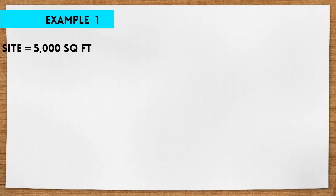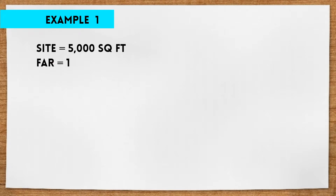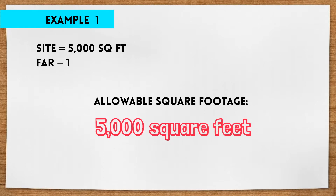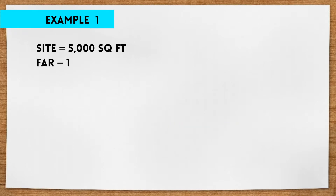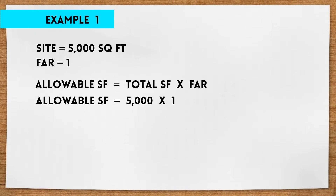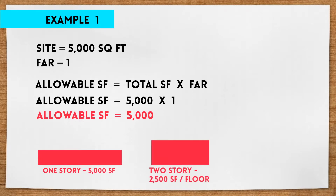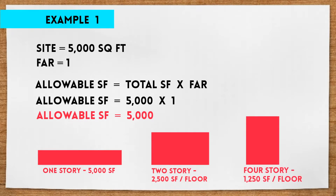Let's say the site is 5,000 square feet and you find out that the FAR is 1. That means that the owner is allowed to build a structure that's up to 5,000 square feet, because 5,000 times 1 is 5,000. That could be a one-story building that's 5,000 square feet per floor, or a two-story building that's 2,500 square feet per floor, or a four-story building that's 1,250 square feet per floor.